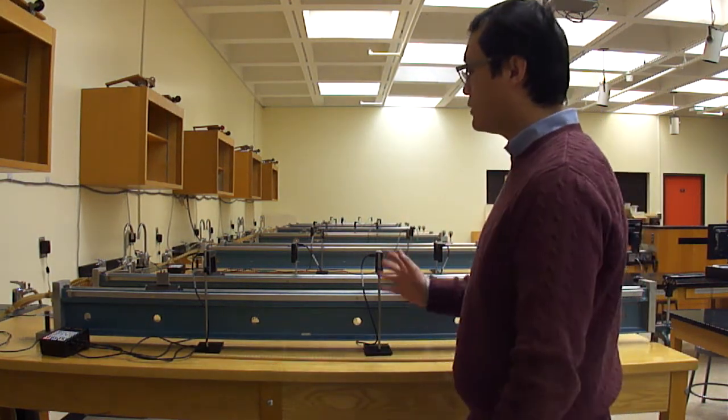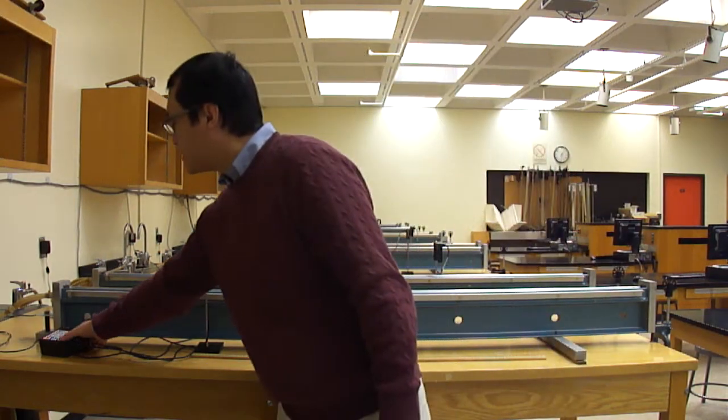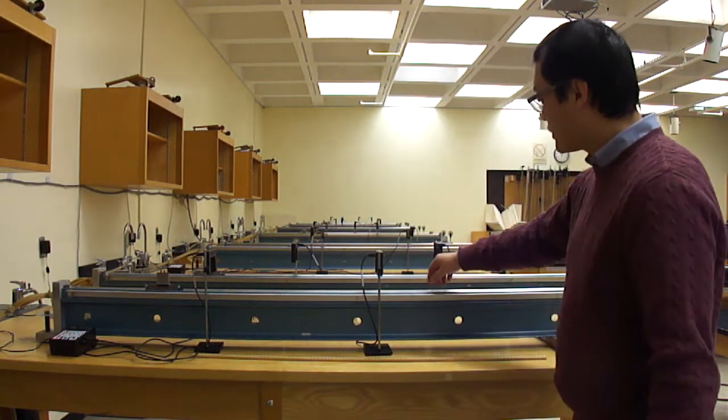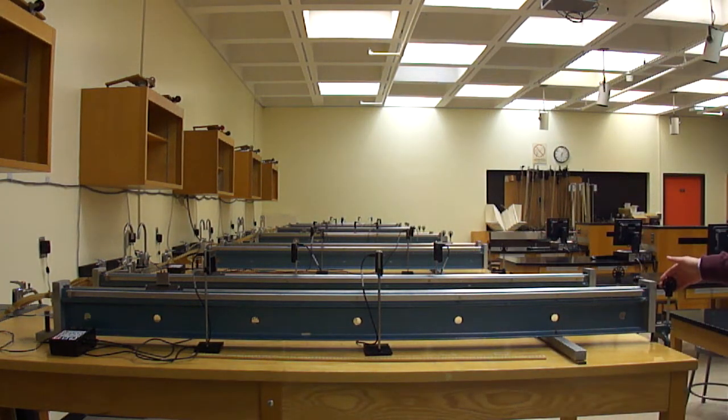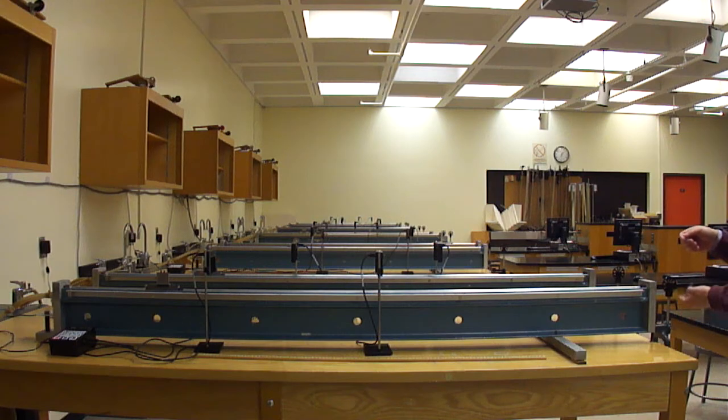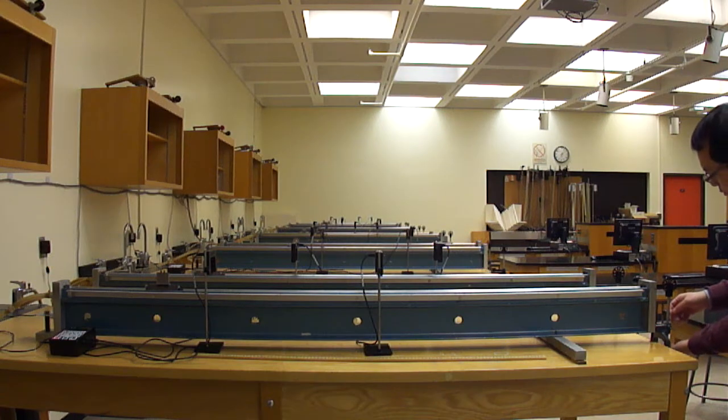So we have two foil gates. This is the foil gates controller as well as the smart timer. The string you probably can't see from the video. Here we have a pulley that has very little friction. At the end of the string we have one clip. We're supposed to have five clips, but right now we only have one.